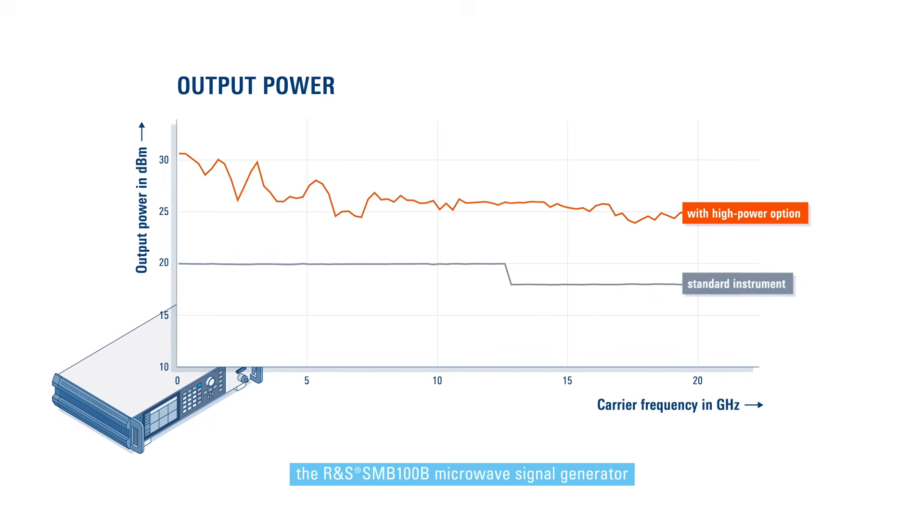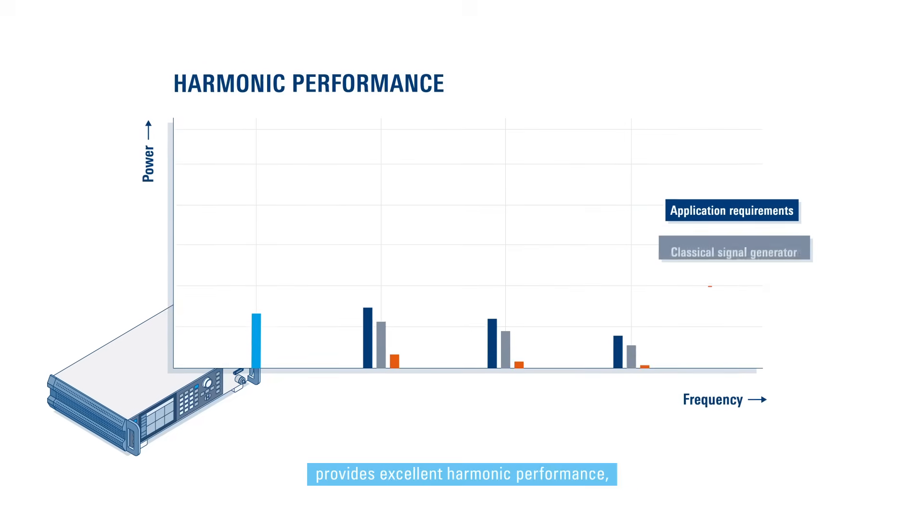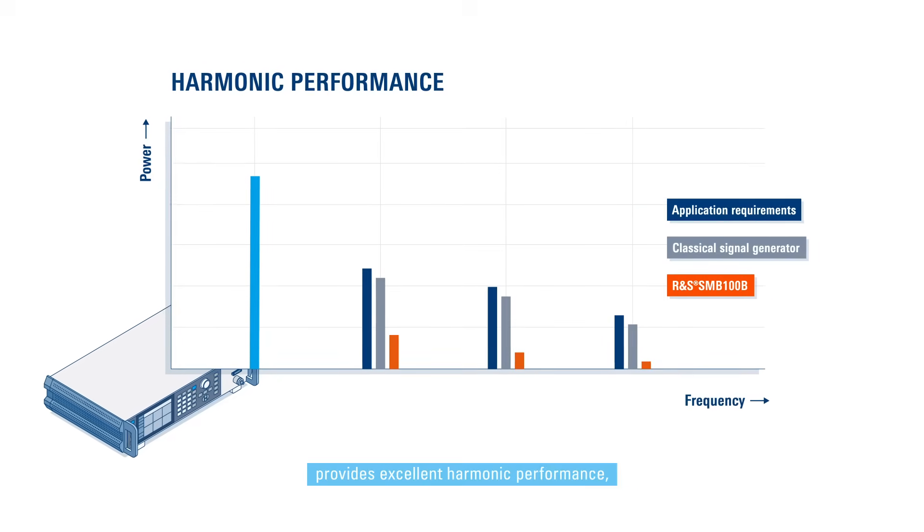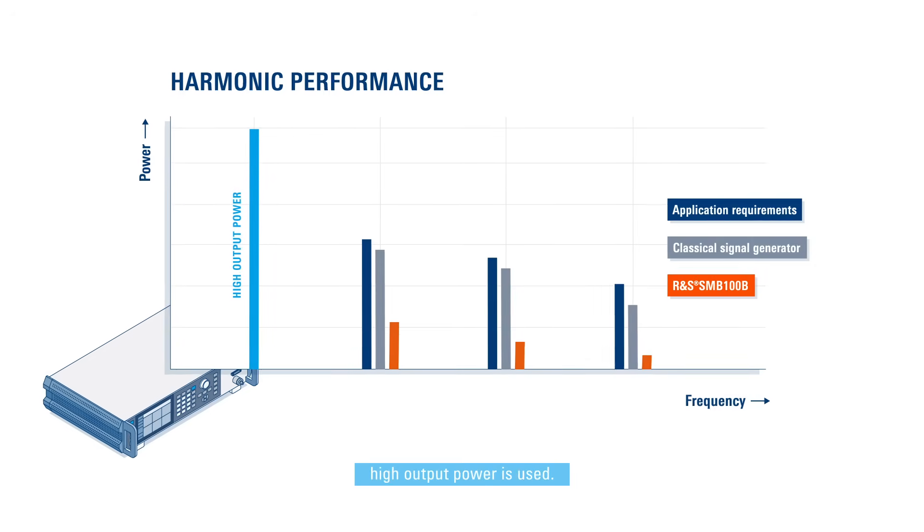In addition, the SMB100B Microwave Signal Generator provides excellent harmonic performance, even when the instrument's high output power is used.